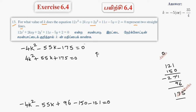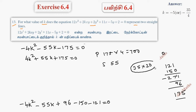So if I do this product, 175 into 4 gives 700. The sum needed is 55. We have 35 into 20 equals 700, and the sum is 55. So splitting the middle term: 4K squared plus 35K plus 20K plus 175 equal to 0.